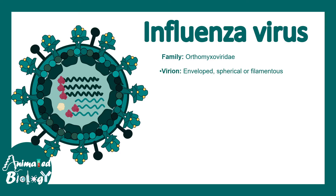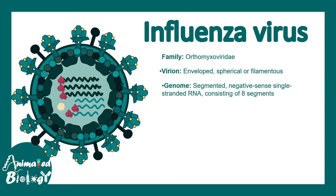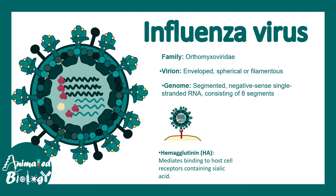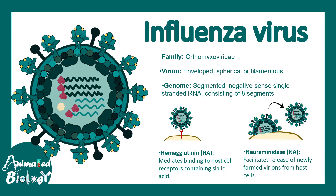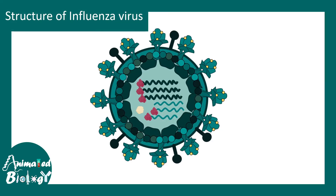Now let's look at more about the influenza virus. It belongs to the family Orthomyxoviridae and it has a virion which is enveloped, spherical, and filamentous. Its genome is segmented — negative sense, single-stranded RNA with eight segments. It has two important surface proteins: hemagglutinin, which helps the virus bind to sialic acid receptors, and neuraminidase, which facilitates the release of newly formed virus from a cell.